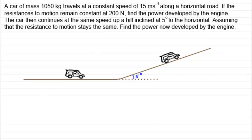Here's an example to bring out these points. A car of mass 1050 kg travels at a constant speed of 15 metres per second along a horizontal road. The resistance to motion is constant at 200 newtons. Find the power developed by the engine. Then the car continues at the same speed up a hill inclined at 5 degrees to the horizontal — find the new power developed.